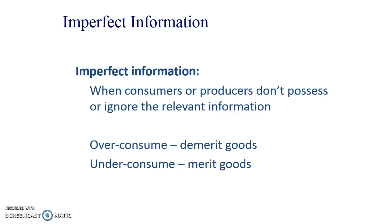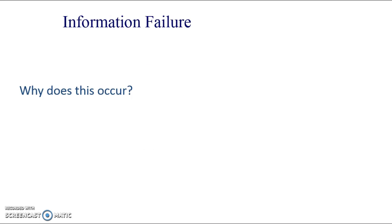So your negative externalities, your positive externalities. Usually in consumption we're thinking about these things, but we could be thinking about them in production as well, because imperfect information does relate to producers as well. We mainly focus on it at the Year 1 or AS level on consumers though, but there are lots of interesting things to look at with producers.